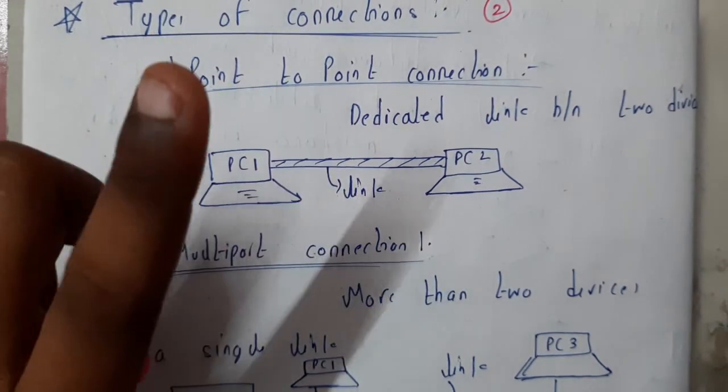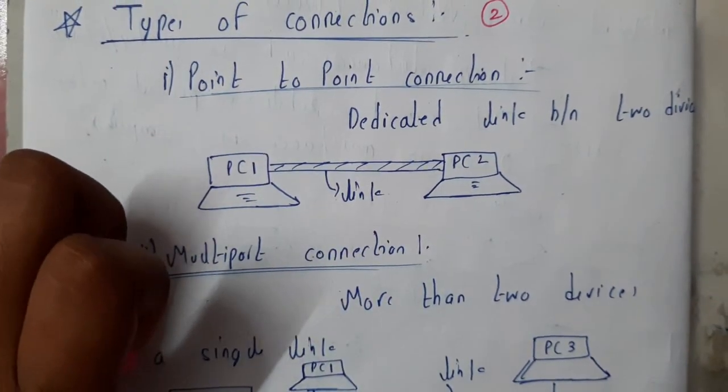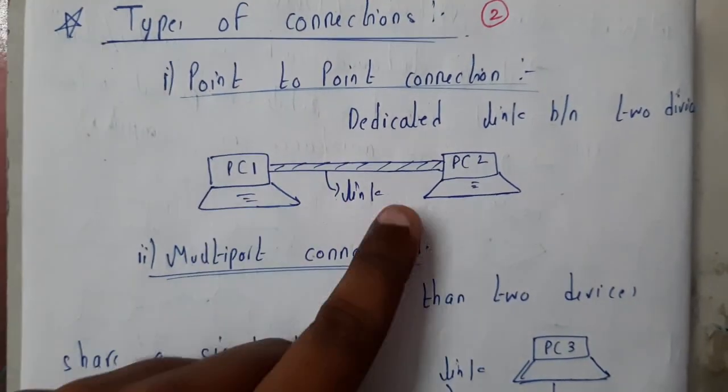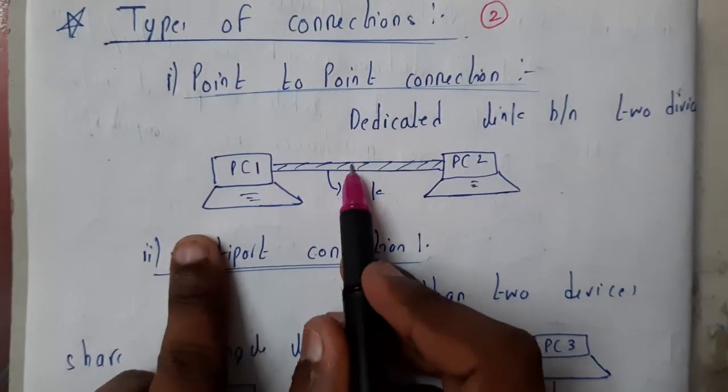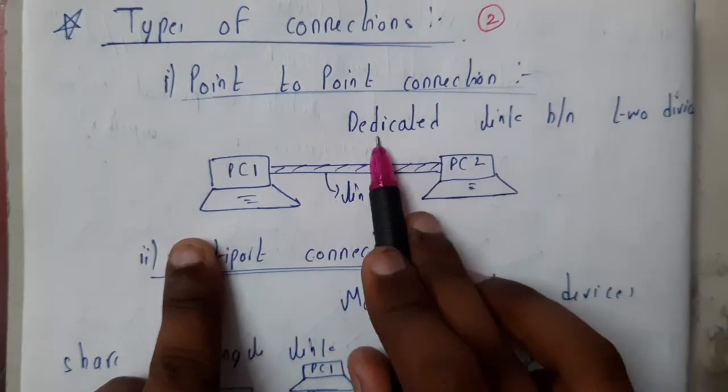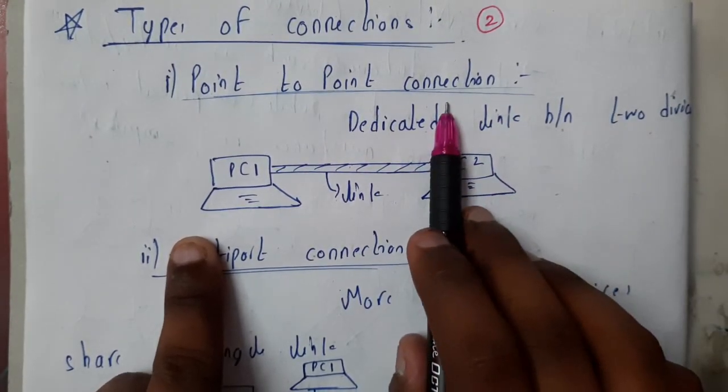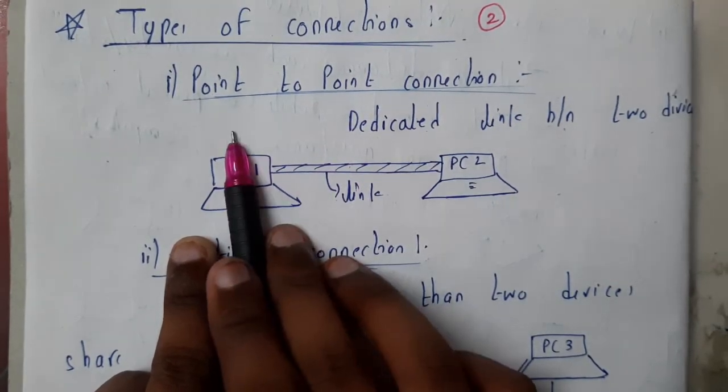Point-to-point and multi-port connection. So basically from the name you can say point-to-point means one computer to another computer, you will be giving a connection. Let us go through the definition. Dedicated link between two devices is nothing but your point-to-point connection. So here you will be having your first PC, your second PC, you will be connecting them.